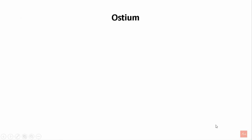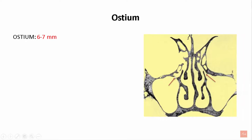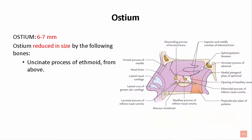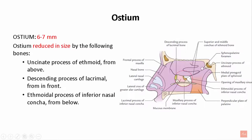The ostium or opening of the maxillary cavity is about 6–7 mm in length. However, in an intact skull, the length is reduced by surrounding bony structures: the uncinate process of the ethmoid bone from above, the descending process of the lacrimal bone in front, the ethmoid process of the inferior nasal concha from below, and the perpendicular plate of the palatine bone from behind. These structures reduce the size of the ostium.